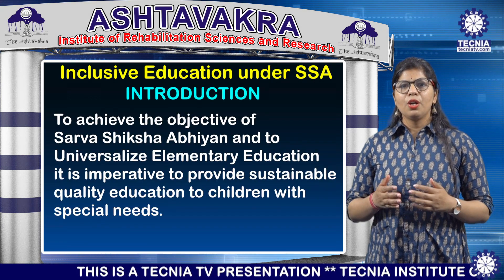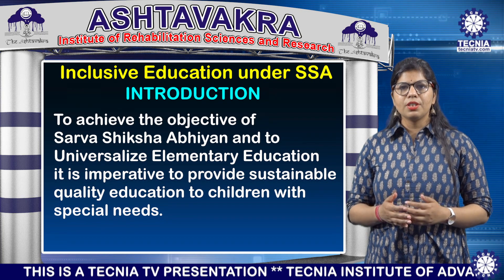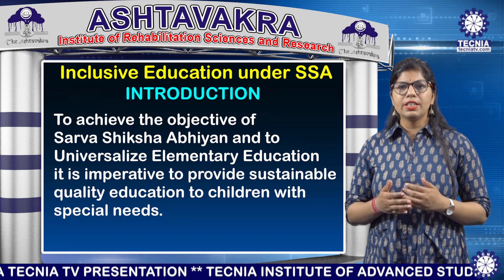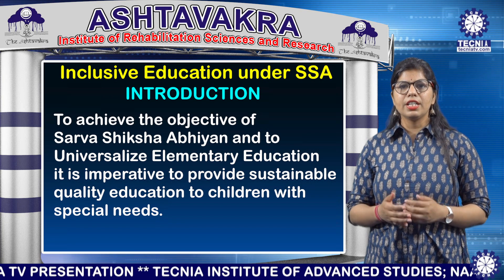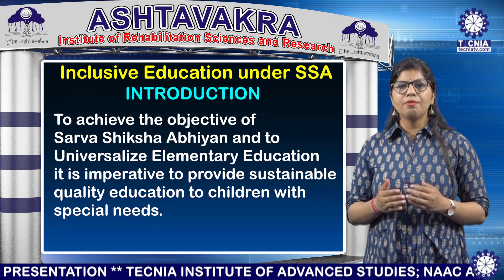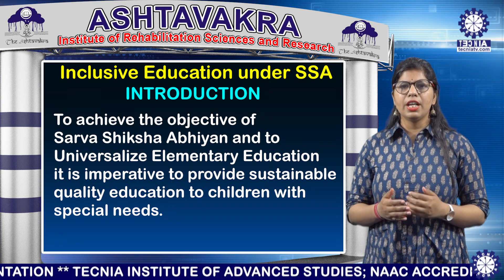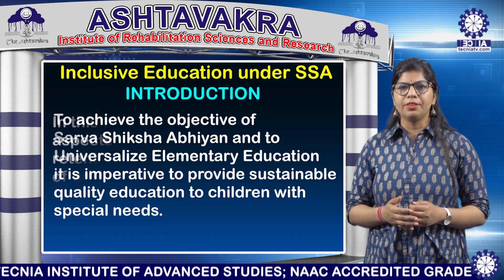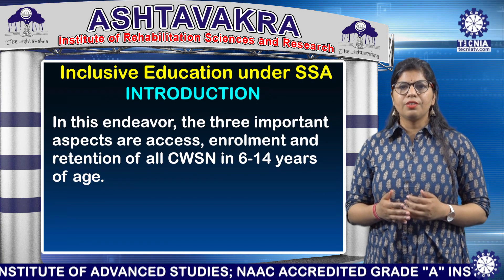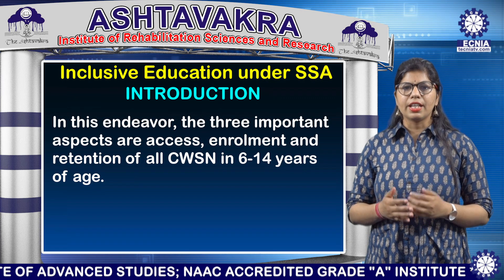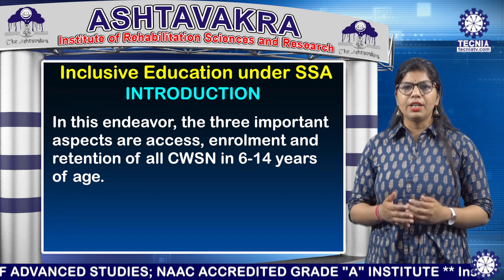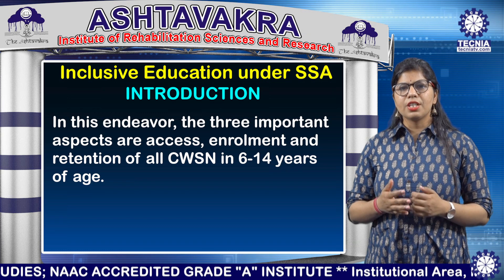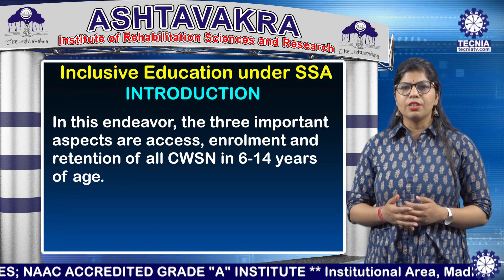Introduction: To achieve the objectives of Sarva Shiksha Abhiyan and to provide universalized elementary education, it is imperative to provide sustainable quality education to children with special needs. In this endeavour, the three important abstracts are access, involvement, and retention of all children with special needs in the 6–14 years age group.